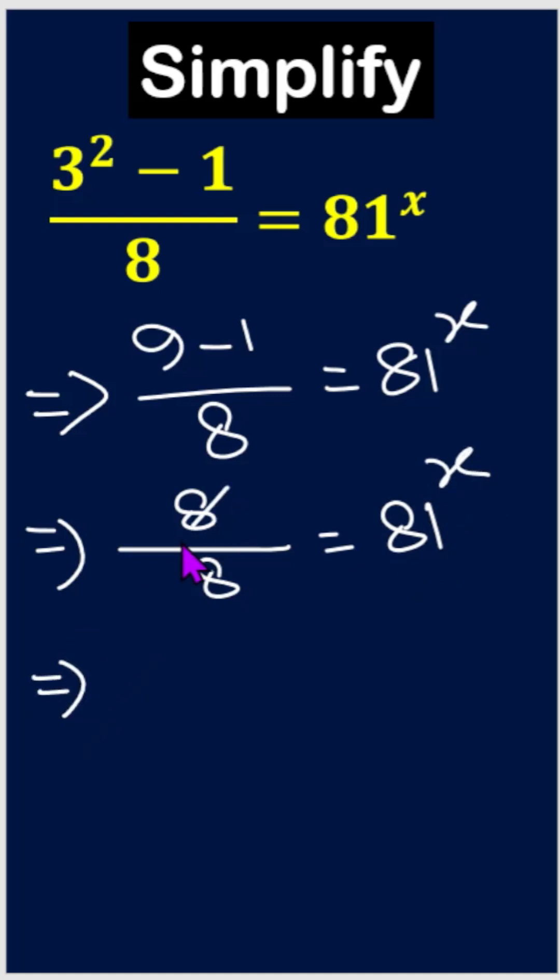So 8 divided by 8 is 1, so we can write 1 and here is 81 to the power x.